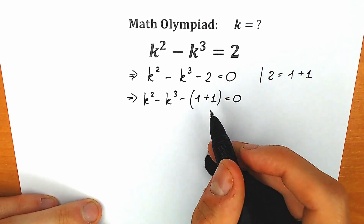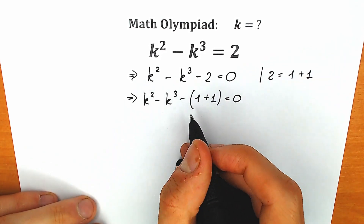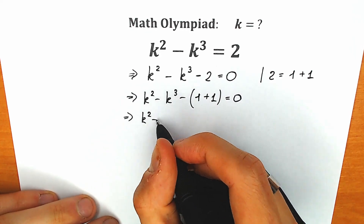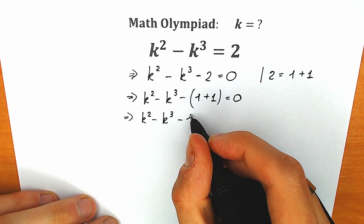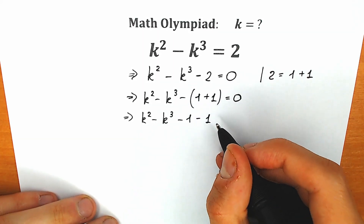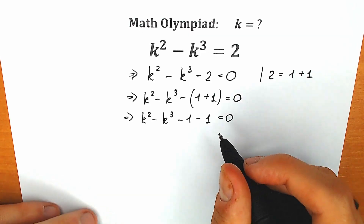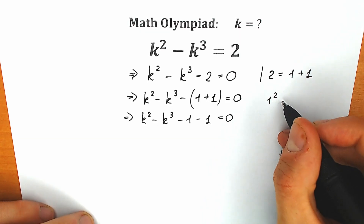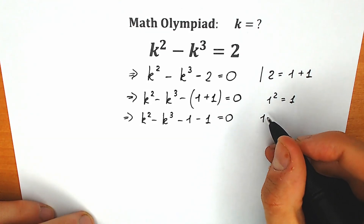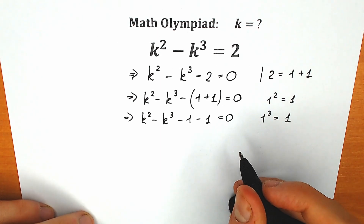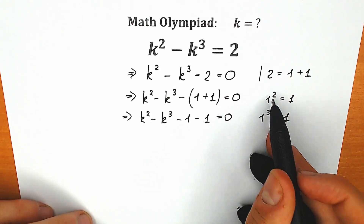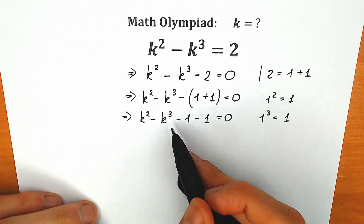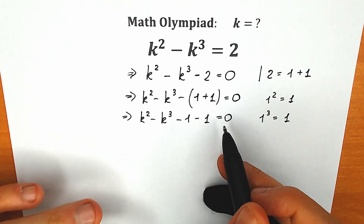A lot of students might be asking why I changed this 2 by 1 plus 1 — in a few seconds you will understand. Let's open the parentheses. As a result, we have k squared minus k cubed minus 1 and minus 1, so minus 1 minus 1 equal to zero. Right now we have 2 ones, and it doesn't matter which is which. We have 1 and 1.